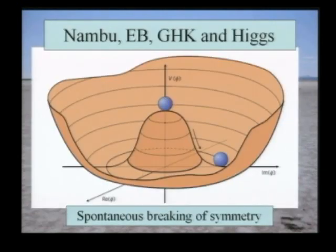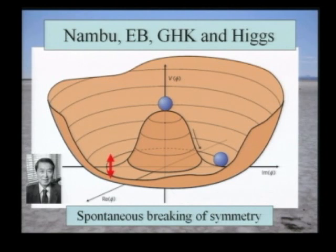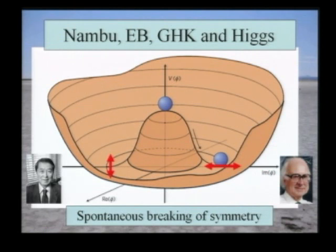To summarize the difference between Higgs and the others: Nambu, Englert-Brout, and GHK basically focused on the fluctuations around the bottom of the Mexican hat potential — degrees of freedom floating around the bottom. Whereas Higgs was the one guy who explicitly discussed the quantum degree of freedom corresponding to oscillations out of the bottom of the potential. That is his claim to more fame than the others.